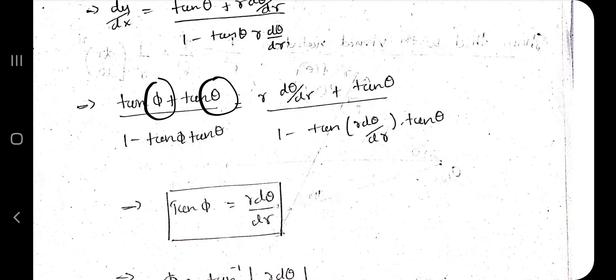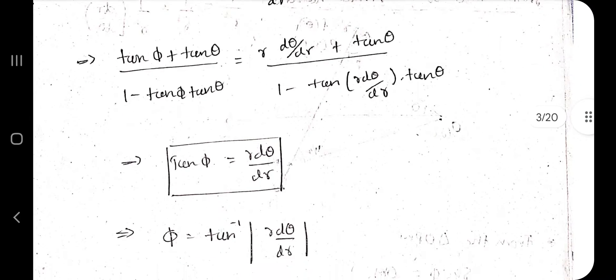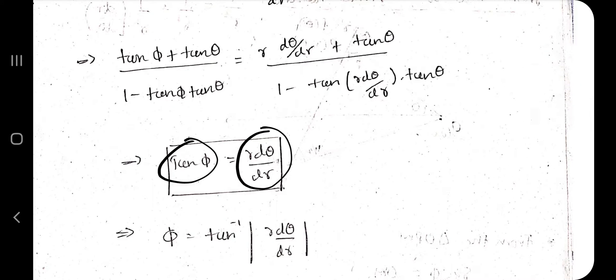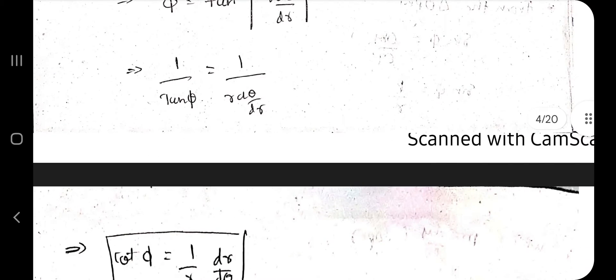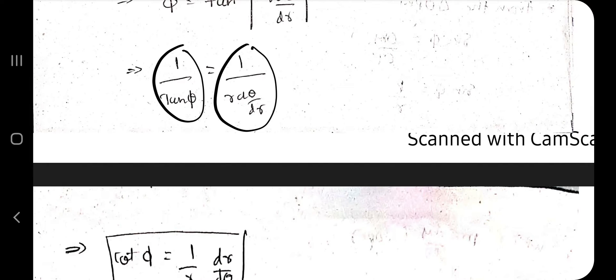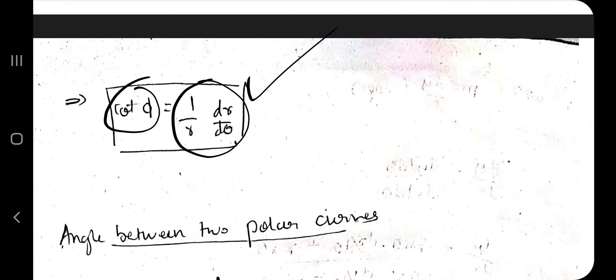Comparing terms, tan(theta) is common in both numerator and denominator. Instead of tan(phi) what we get is r·dθ/dr, so tan(φ) = r·dθ/dr, and therefore cot(φ) = (1/r)·(dr/dθ). This is the main equation which we will use in numericals and further derivations.